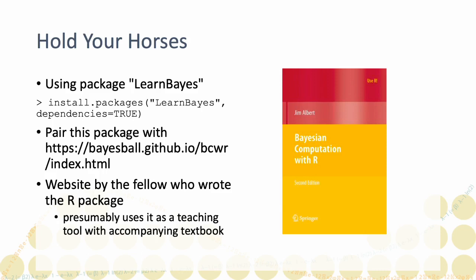The first such textbook I came across is called Bayesian Computation with R, written by the fellow who wrote the Learn Bayes package that accompanies the textbook. Presumably, the package includes all the relevant functions and sample datasets that go with the textbook, which you can find at the link shown here.